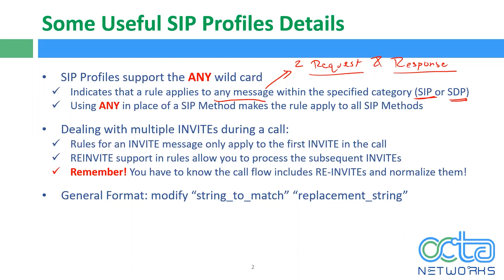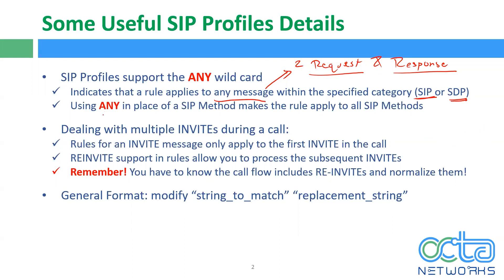Using 'any' in place of a SIP method makes the rule apply to all SIP methods. In requests you have many methods like INVITE, BYE, MESSAGE; in responses you have 200 OK, 180 Ringing, 100 Trying. If you say 'all requests,' the modification will be applied to all request messages, whether it's an INVITE or a BYE. If you don't want to specify the method, use the 'any' wildcard so it applies to your request or response completely.